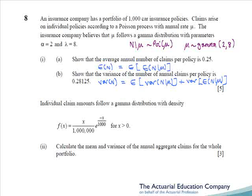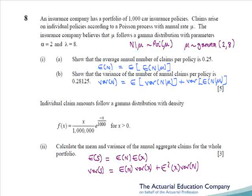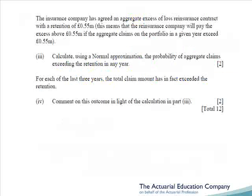Alternatively, you could have approached this question using mixture distributions, though we would typically recommend that only after a stiff drink. In part 2, we need to calculate the mean and variance of the annual aggregate claims for the whole portfolio, using the collective risk formula from page 16: E[S] equals E[n] times E[x], and Var[S] equals E[n] times Var[x], plus E²[x] times Var[n]. Don't get caught out — this gives the mean and variance for one policy, but we're told there are 1,000 policies in this portfolio. Assuming independence, we simply multiply the mean and variance by 1,000. Part 3 involves calculating the probability of aggregate claims exceeding a retention of 0.55 million using a normal approximation, which would have presented no problem.